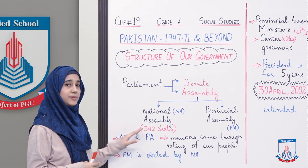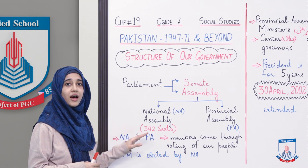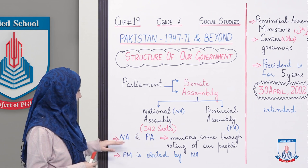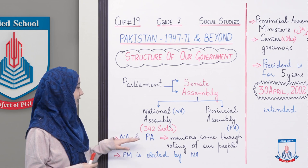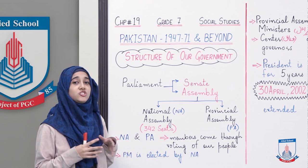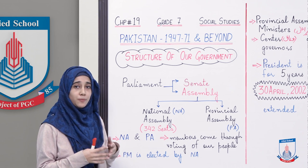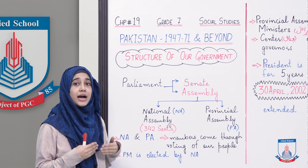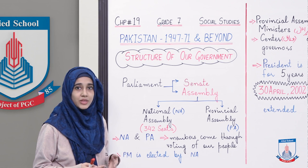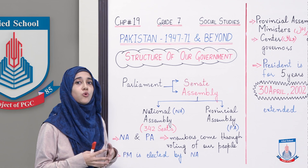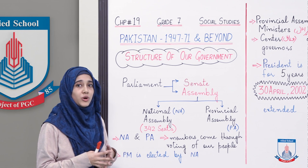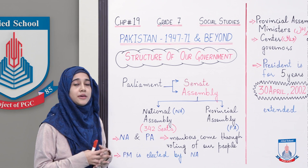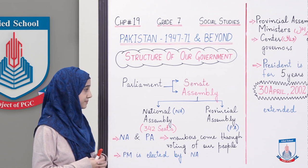Ab national assembly mein there are 342 seats. National assembly aur provincial assembly ke jitne bhi members hote hain, woh basically election ke through aate hain, yaani humare votes ke through aate hain. Hum jin logon ke liye vote karte hain, wohi national assembly aur provincial assembly ke members bante hain.